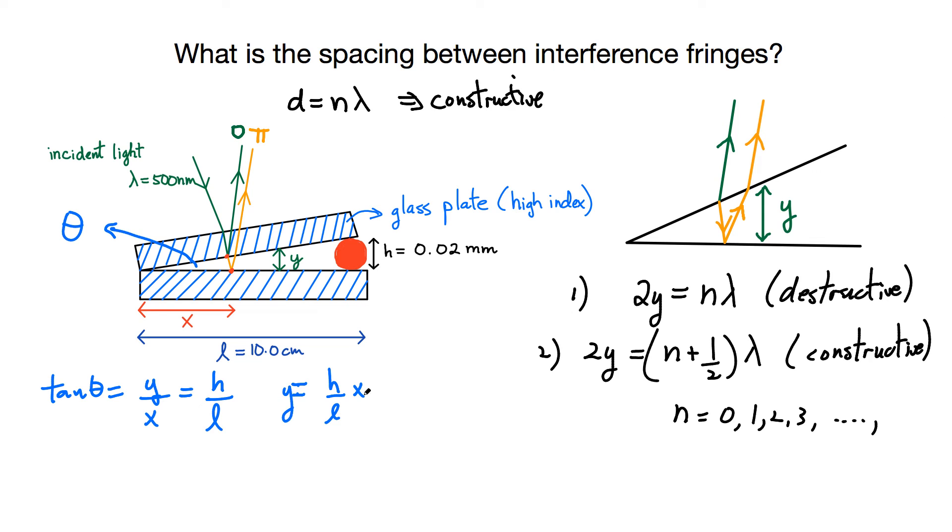Now if I go back to my equation one—if you go back to equation one where we're going to have dark fringes—instead of writing two times y, I have an expression now. This is h over l multiplied by x equals n lambda. This is my condition for destructive interference for this problem. So at the end, x is equal to—be a little bit careful here—n times lambda times l divided by two times the spacing h.